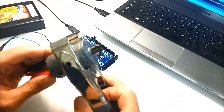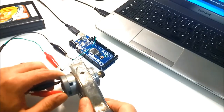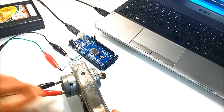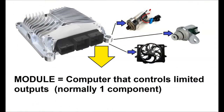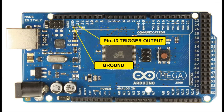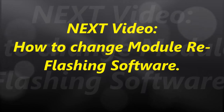This has been a video that goes into automotive control modules and how we can affect them using an Arduino board, just to show you the actual mechanism involved in controlling components in automobiles. Next video, we're going to go deeper into the reflash software and how it works. This has been a video on automotive module control, and thank you for watching.